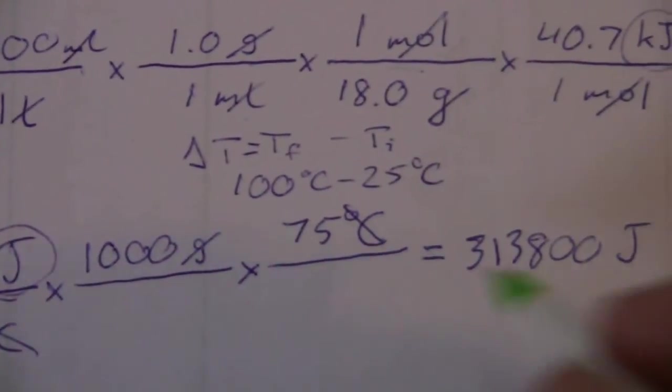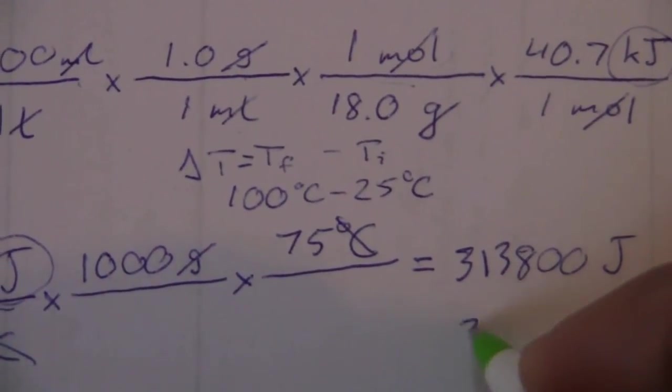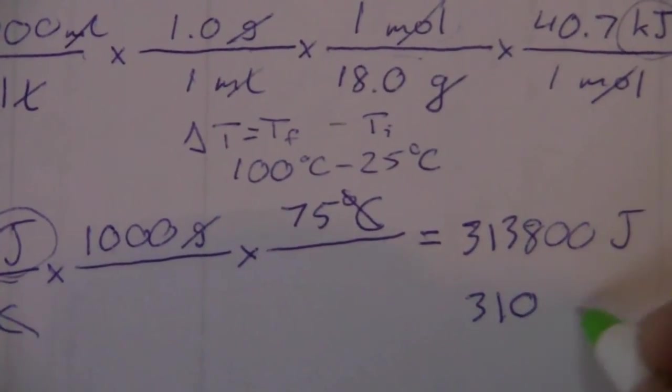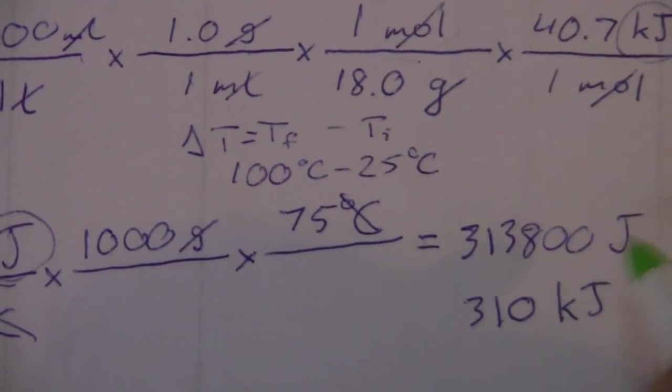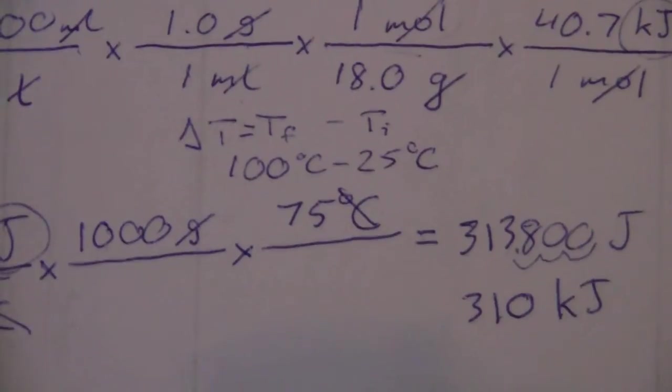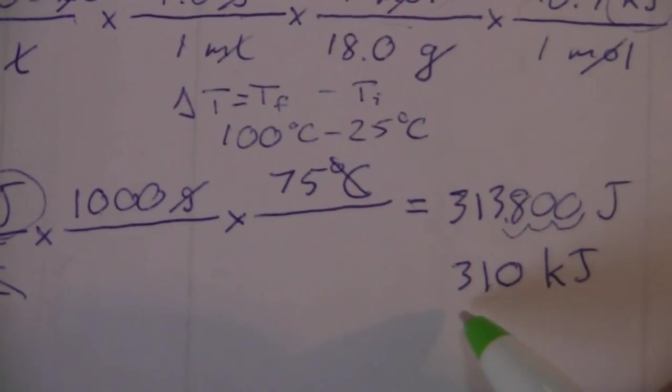So let's round this off to 310 kilojoules. Move the decimal three places over, and that gets us into kilojoules.